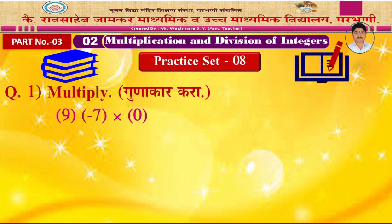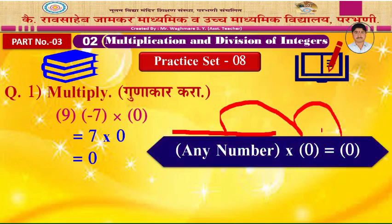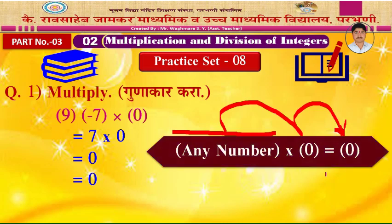Example 9: Minus 7 into 0 is equal to 0 — because 7 into 0 is 0. Remember this rule: any number multiplied by zero gives a product of zero.